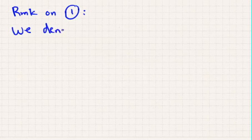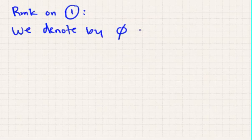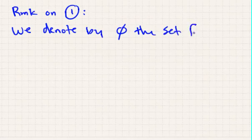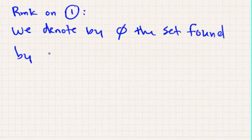So we'll remark on axiom 1, which is the empty set axiom. We denote by this the set satisfying the empty set. So just to state explicitly, this is what this symbol means. The set found by axiom 1.